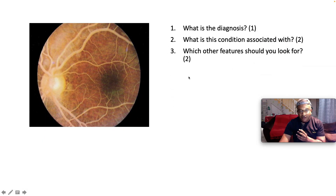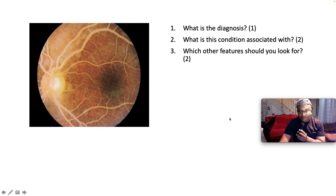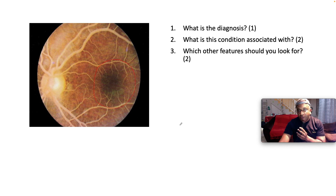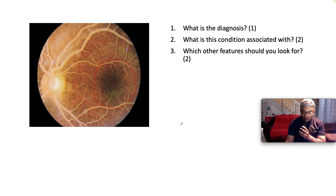Here is the question. We can see a beautiful picture of the retina, and it is this area which looks a little bit fishy. So what is the diagnosis for one mark? And then number two, what is this condition associated with? And thirdly, which other features should one be on the lookout for?